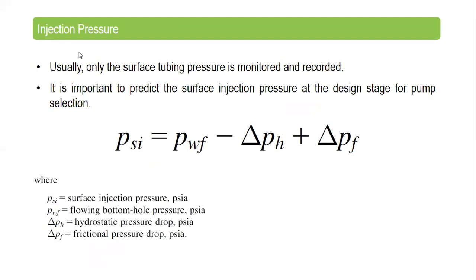Regarding injection pressure, usually only the surface tubing pressure is monitored and recorded. It is important to predict the surface injection pressure at the design stage for pump selection. The formula is: surface injection pressure equals flowing bottomhole pressure (flowing injection pressure) minus hydrostatic pressure drop, plus frictional pressure drop. You need to determine your flowing injection pressure and calculate the hydrostatic pressure.